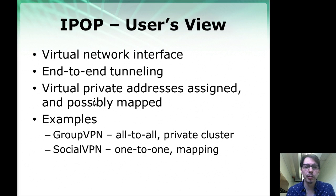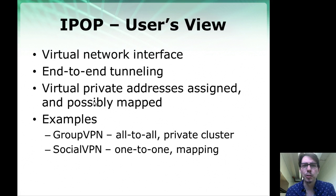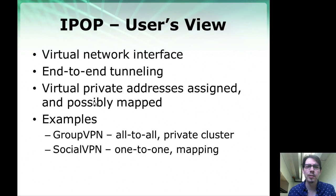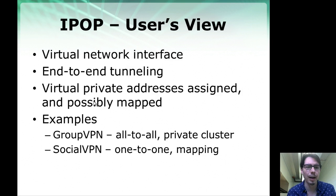Another example is SocialVPN, where there's no single address space for all the nodes. Every user has their own address space of their friends, and they map devices of their friends to dynamic IP addresses that are assigned and bound to a local virtual private subnet.